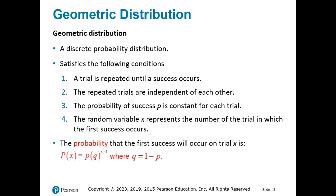The probability that the first success will occur on trial X is P, times its complement Q — the likelihood of failure — raised to the X minus 1 power, where Q equals 1 minus P. Note this notation: you might be tempted to think of this as function notation, but this is multiplication. You're multiplying P times Q raised to a power. Notice that it is Q that is being raised to a power, not both P and Q.